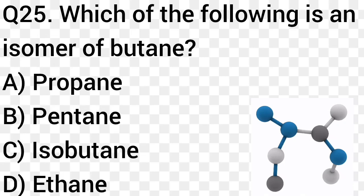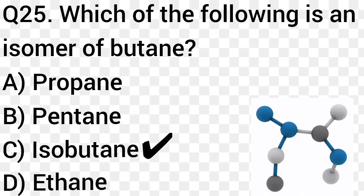Question number 25. Which of the following is an isomer of butane? Option A: Propane. Option B: Pentane. Option C: Isobutane. Option D: Ethane. The right answer is option C, Isobutane.